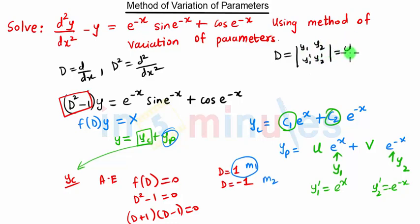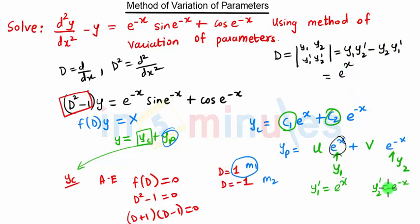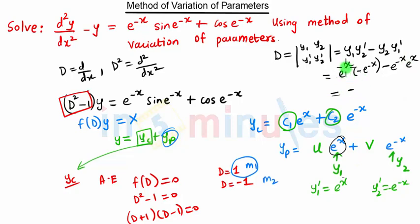We also calculate the Wronskian W, which is the determinant of [y₁, y₂; y₁', y₂']. This equals y₁·y₂' - y₂·y₁'. So W = e^x · (-e^(-x)) - e^(-x) · e^x = -1 - 1 = -2. Therefore W = -2.